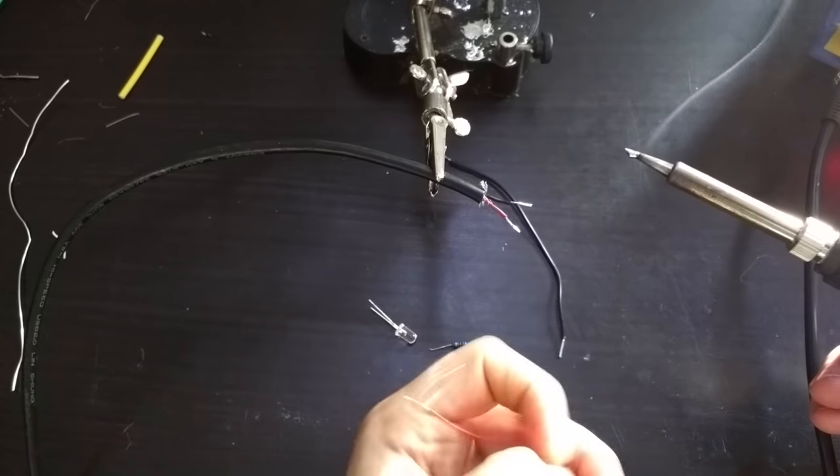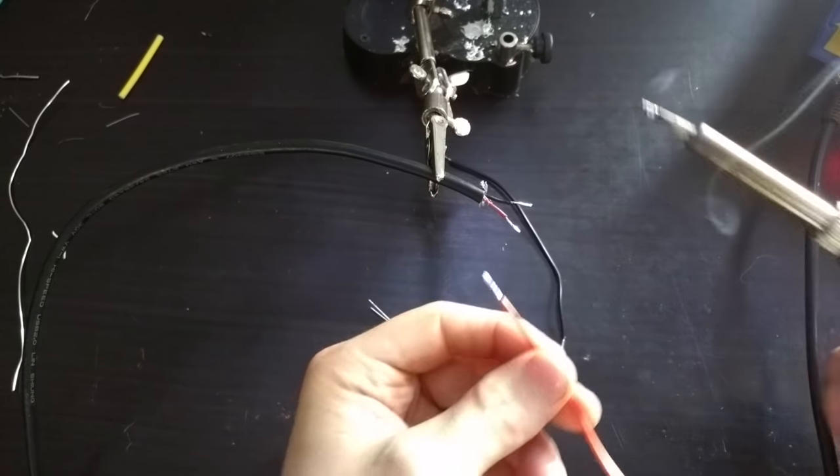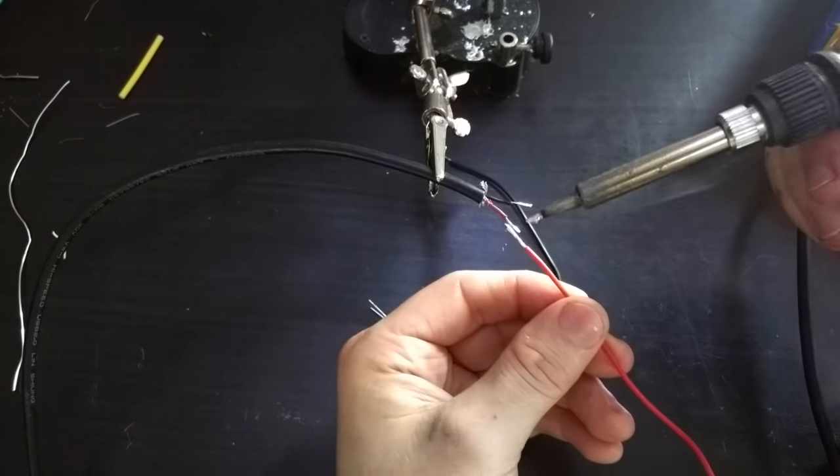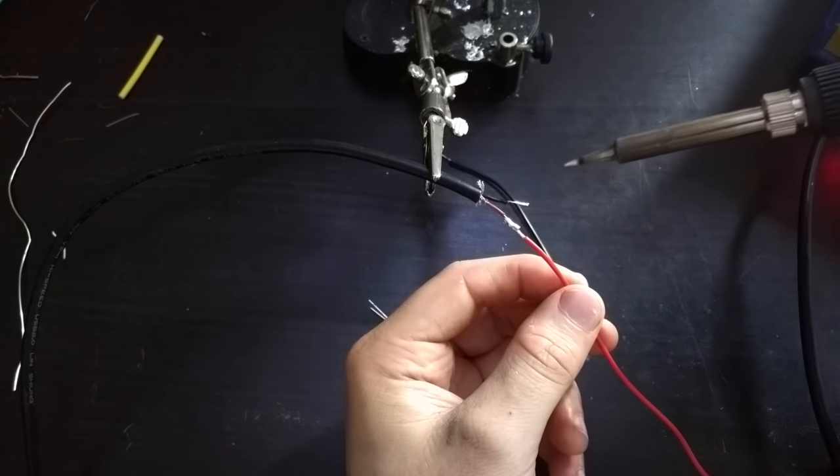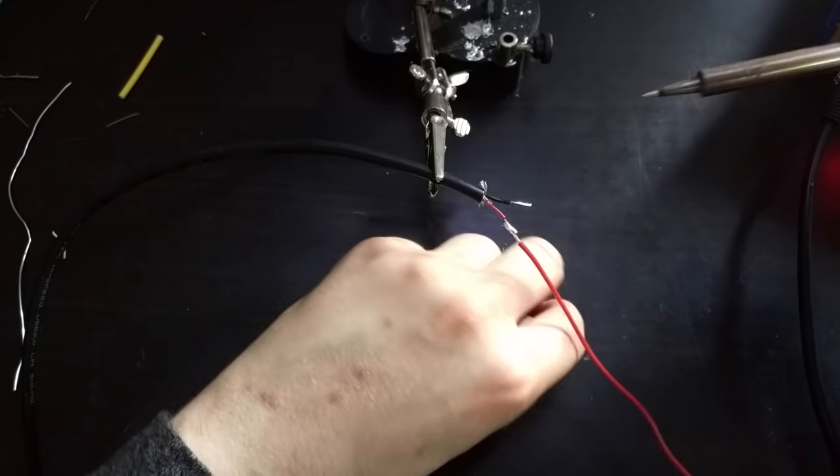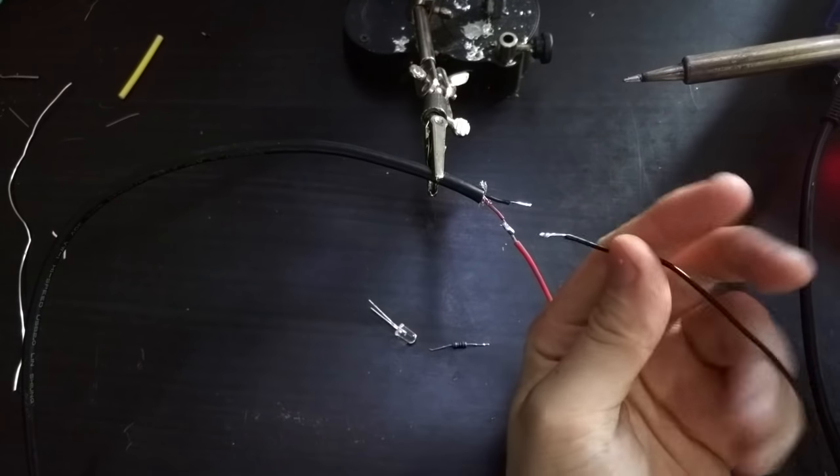I've already pre-tinned most of these wires. So I'm going to use my soldering iron to join the red wire to the red wire. And then I'm going to do the same with the black wire as well.